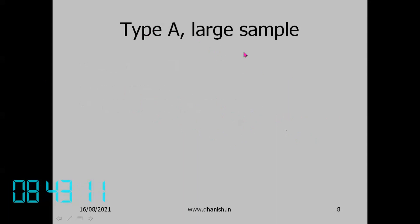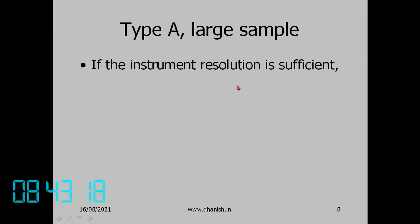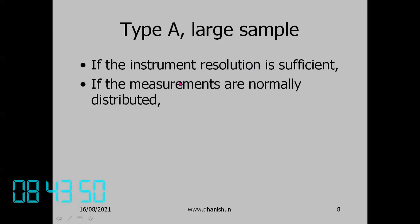For Type A with a large sample: even with a large sample, you may not be able to calculate uncertainty if the instrument resolution is insufficient. For example, using a meter rod from a textile shop to measure a table — all readings will be very similar and you get no variation. We assume measurements are normally distributed; for large samples, we can verify this by plotting a histogram.